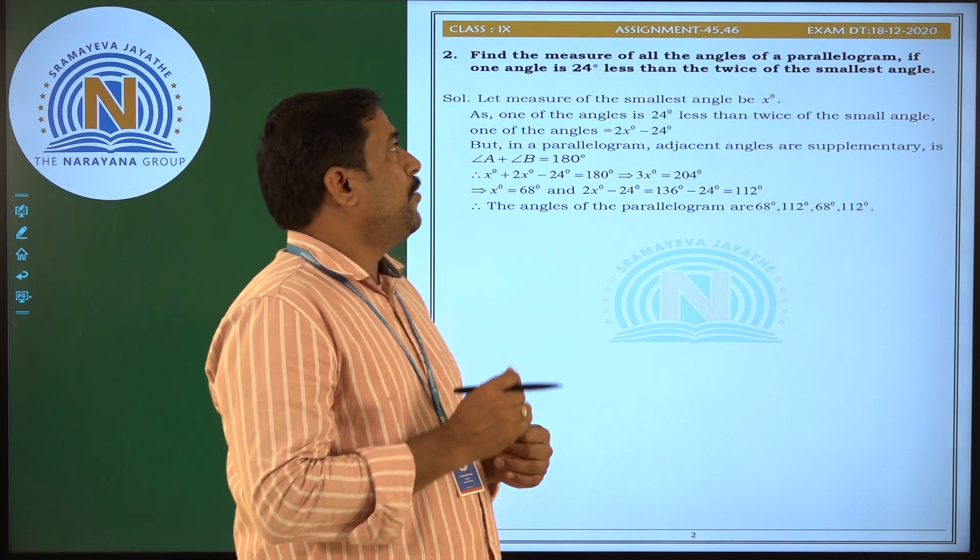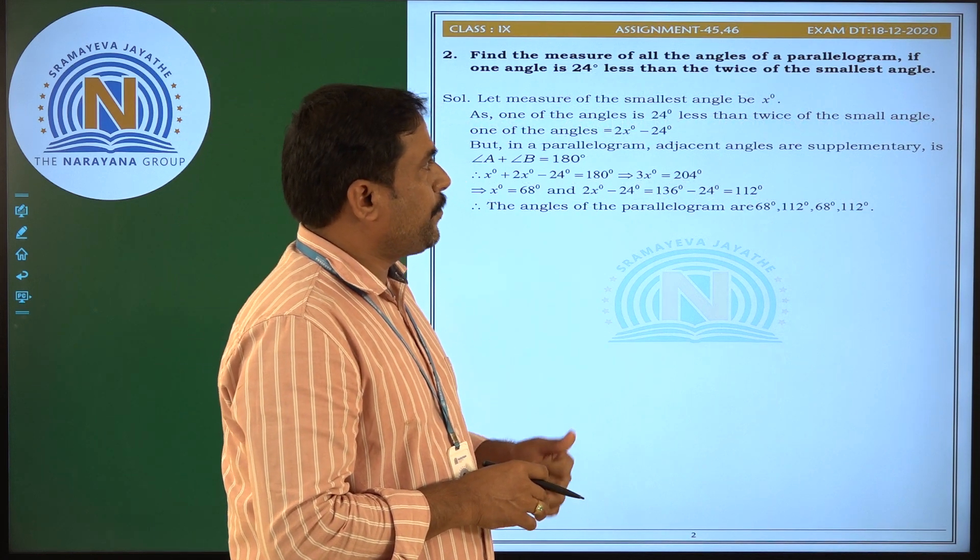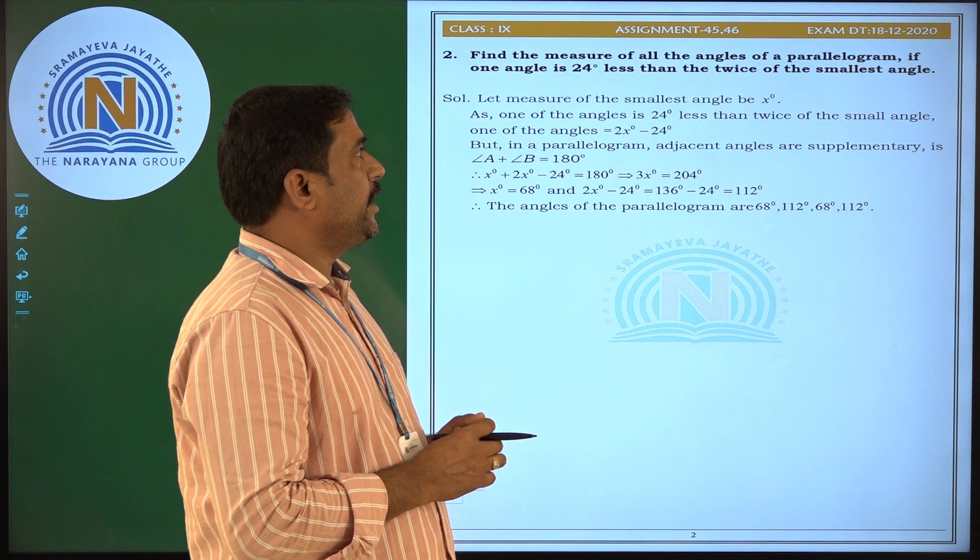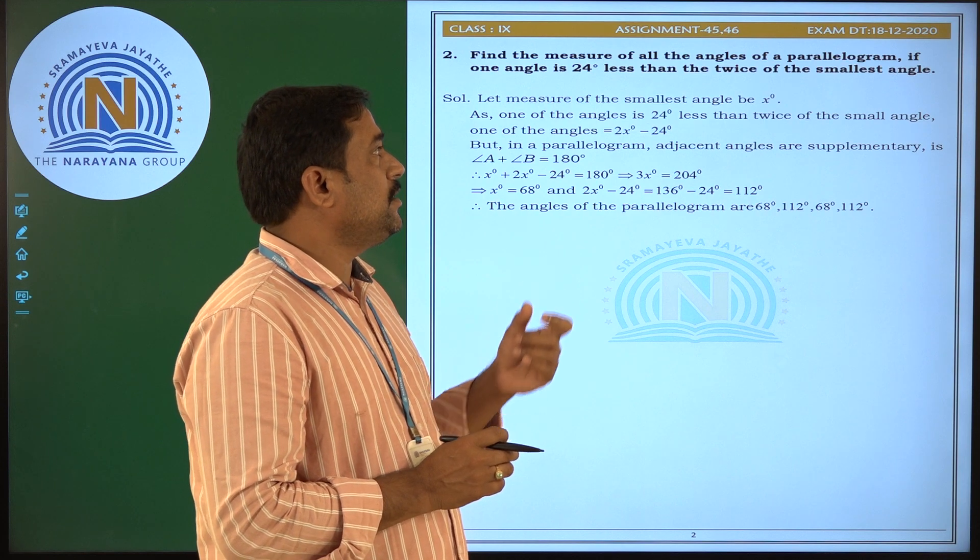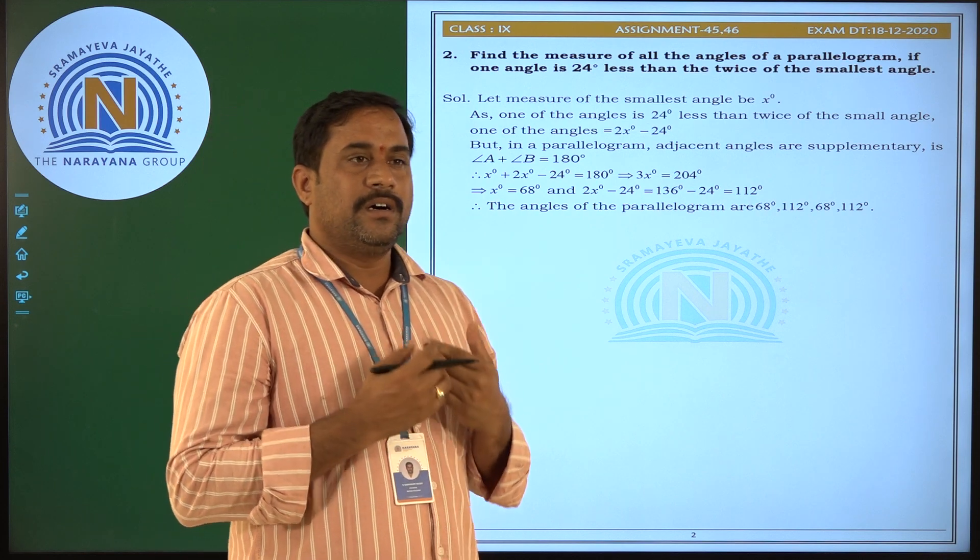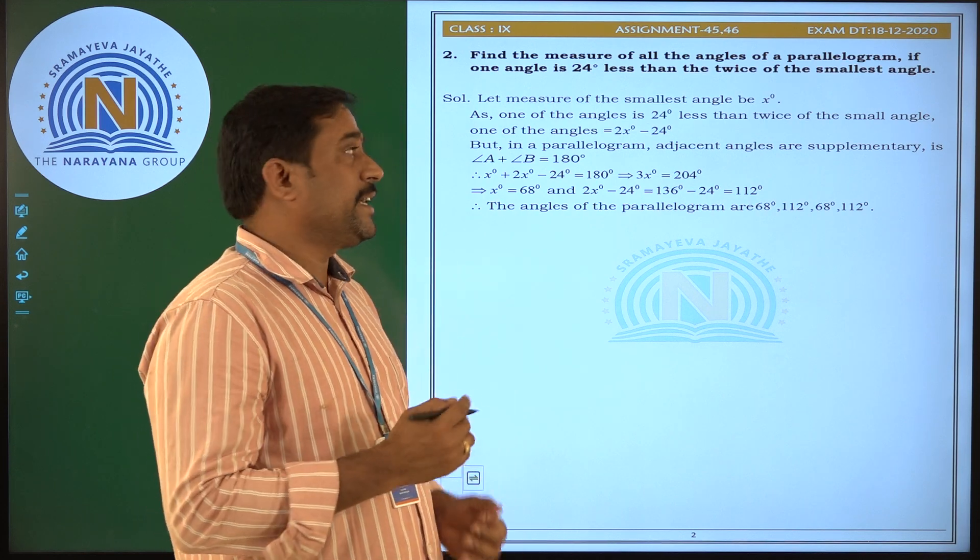Find the measure of all angles of a parallelogram if one of the angles is 24 degrees less than twice the smallest angle. So here the smallest angle I am taking as x degrees.